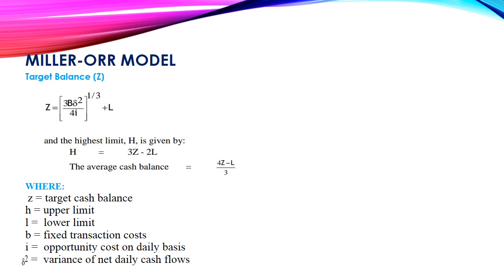According to the two gentlemen, the target cash balance is given by this formula: the target cash balance Z equals the cube root of (3 times B times the variance, divided by 4I), then you add L, where L represents the lower limit.